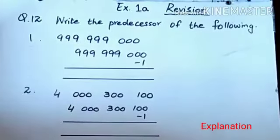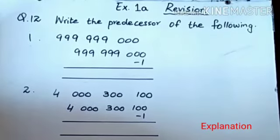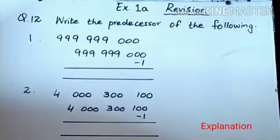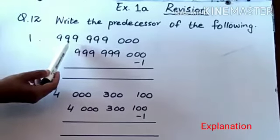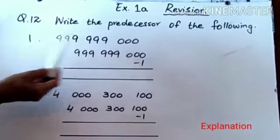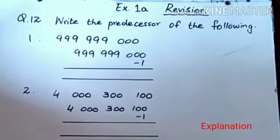Exercise 1A Revision. Question number 12: Write the predecessor of the following. I have 999,999,999. So what will be the predecessor?